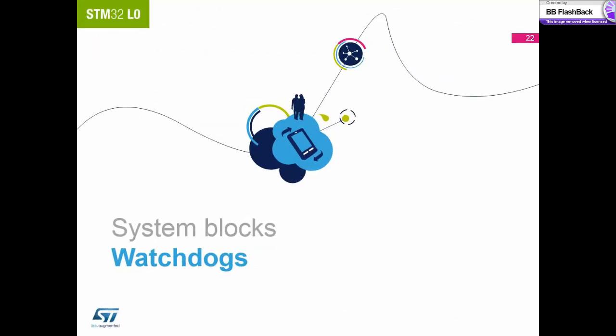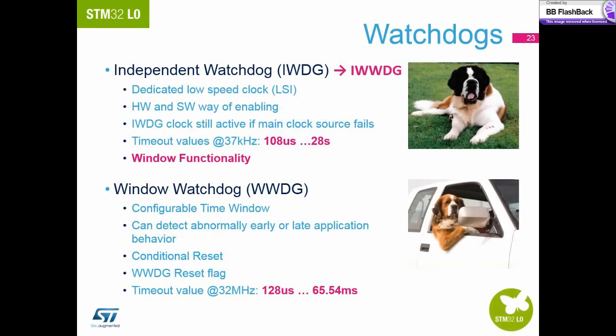The remaining system peripherals are the watchdogs. All STM32s have two watchdogs and the STM32L0 is no different. We have the window watchdog running off the same clock source as the core. This can be configured for early and late application behaviour and is capable of being stopped in certain low power modes. This is the reason we have the second watchdog, the independent watchdog, powered by the LSI clock source. This watchdog can provide longer timeouts to cover certain low power modes.